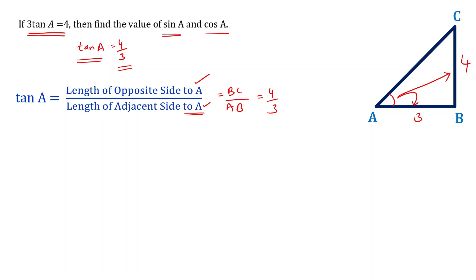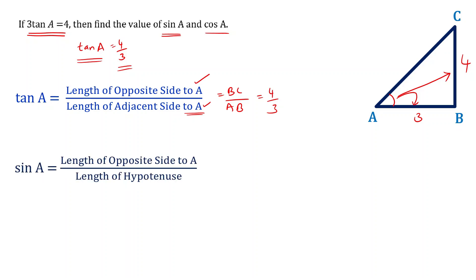Now we have to find the value of sin A. Sin A is defined as the length of the opposite side to angle A divided by the length of the hypotenuse. The opposite side to angle A is 4. But the length of the hypotenuse is not known, so we apply the Pythagoras theorem.